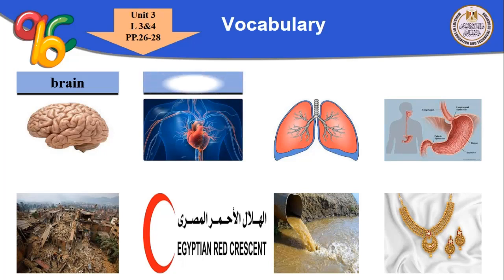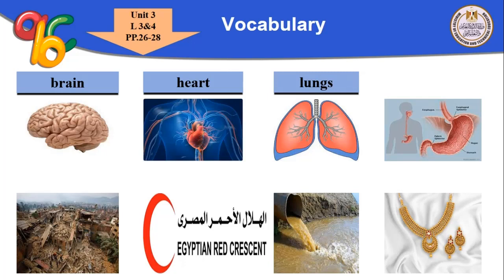The heart — it pumps blood around the body. The heart is a vital organ that circulates blood, also getting out air with carbon dioxide.